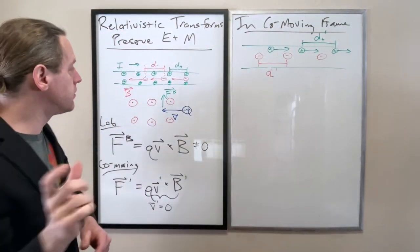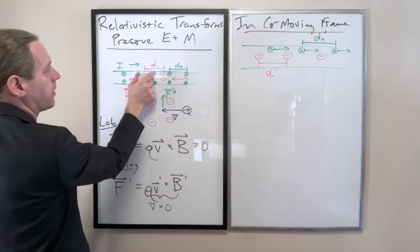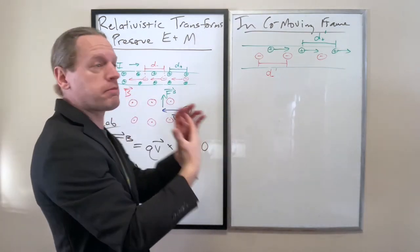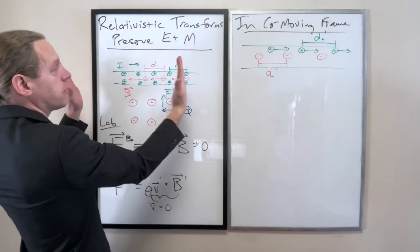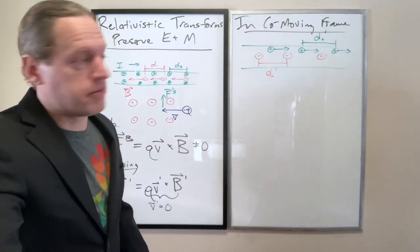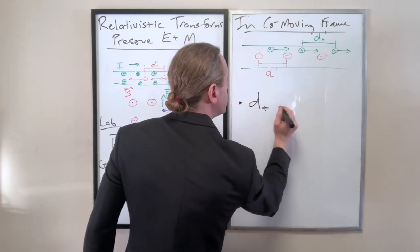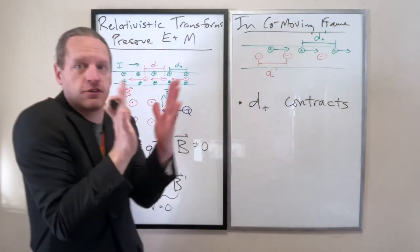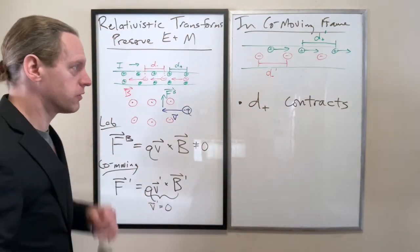We now have to write d plus prime, because as we know, in relativity, lengths contract or expand when transformed to other frames. And same thing, I'm going to call this d minus prime. And this is the key now. If these positive charges are all now moving forwards, and the negative charges are all at rest, what happens now is that previously, when the positive particles were at rest in this frame, once we view them from a frame where they are now rushing past, the lengths between the positive particles contracts.